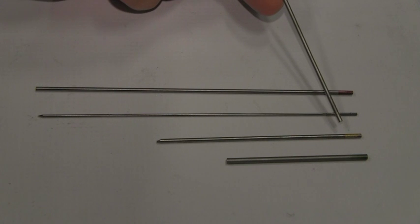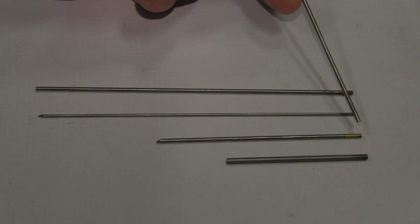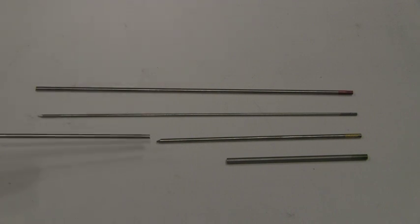Next is a lanthanated. Lanthanated is well suited for both AC and DC, and is designated by a gold band. This tungsten also has some very nice low amperage starting characteristics. Lastly is a pure tungsten designated by a green band. This tungsten has no alloying elements added to it, and this tungsten is best suited for AC welding applications, such as aluminum welding.